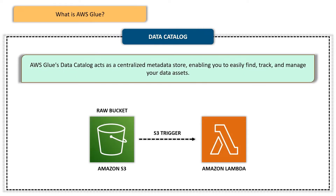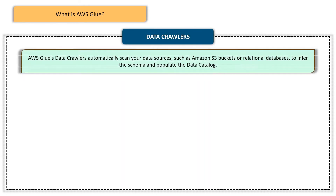The first feature is the Data Catalog. Imagine having a centralized metadata repository that automatically discovers and catalogs your data sources. AWS Glue's Data Catalog does just that — it acts as a centralized metadata store, enabling you to easily find, track, and manage your data assets. With the Data Catalog, you can effortlessly search for specific datasets, understand their structure, and establish relationships between different data sources, streamlining the entire data preparation process.